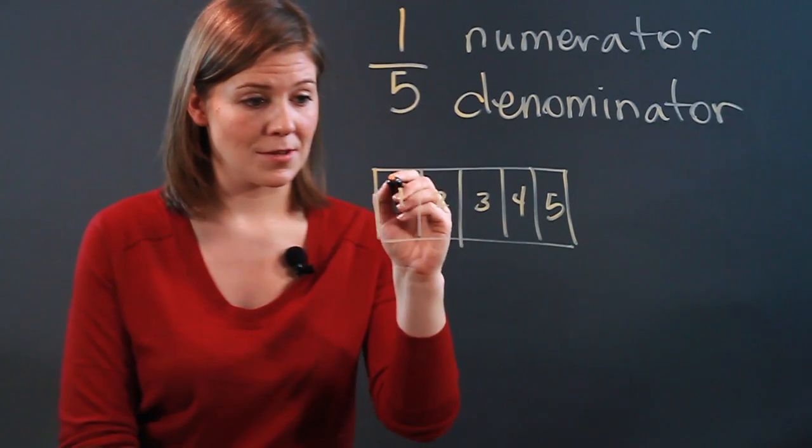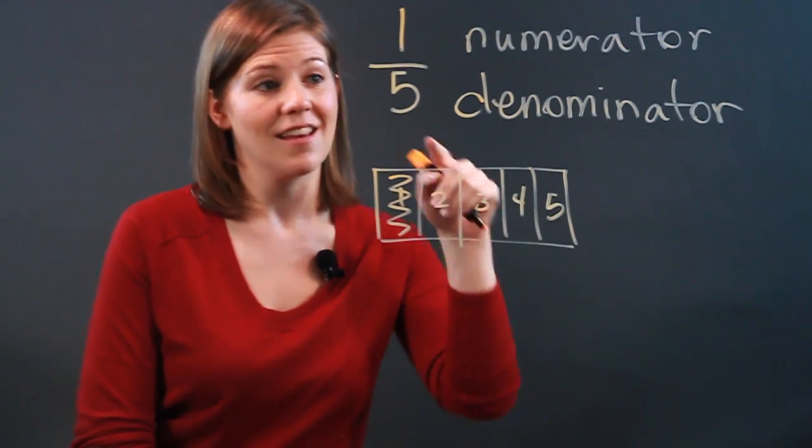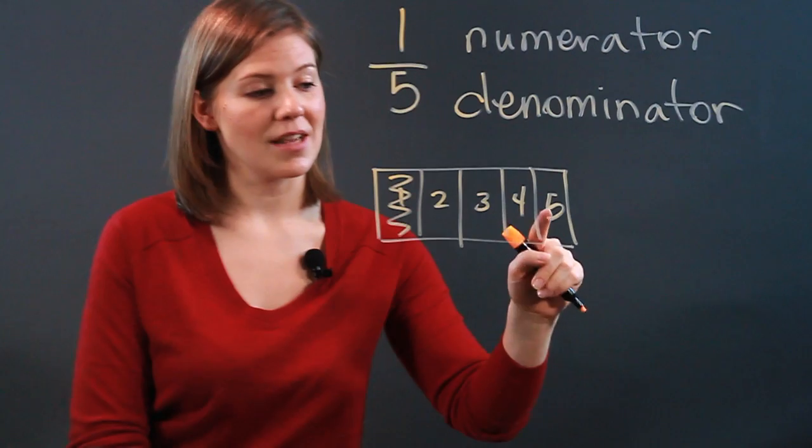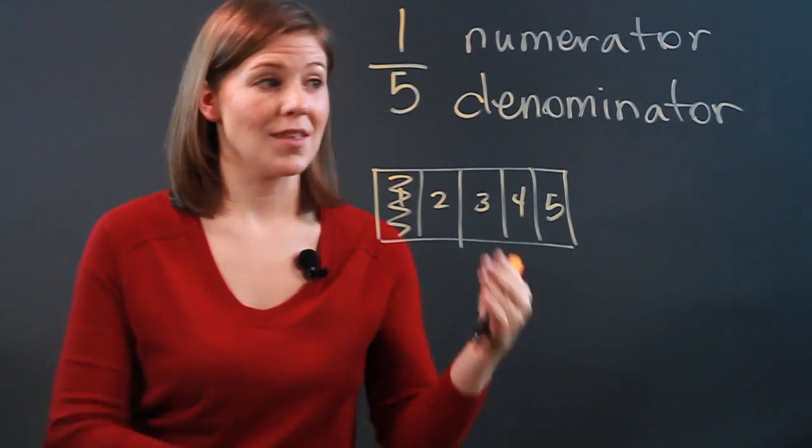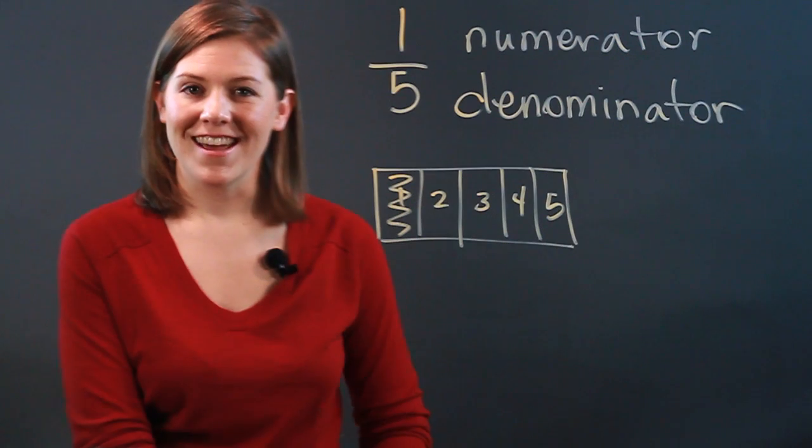So one-fifth shows you one of the five. Again, the bottom number here tells you how many pieces in the whole. So that's how you can determine the denominator in a fraction.